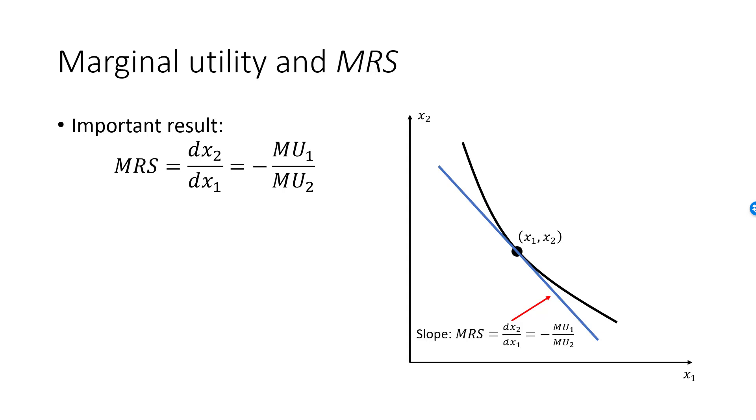Remember that preferences can be represented by many different utility functions. If you select a different utility function to represent our preferences, your marginal utilities will be different. However, the ratio of these marginal utilities will be the same.